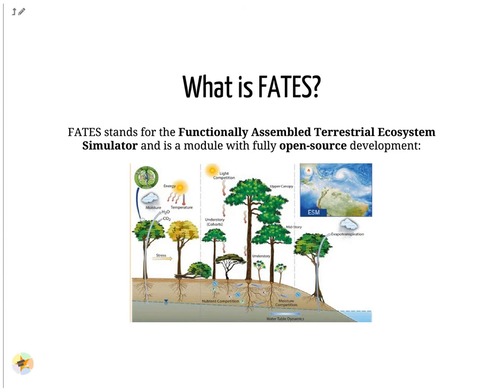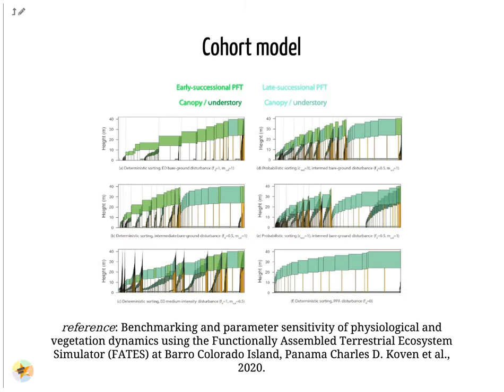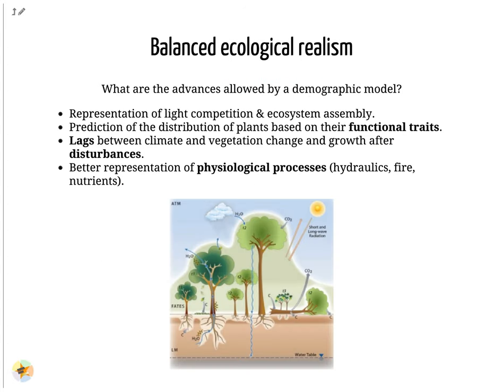FATES stands for the Functionally Assembled Terrestrial Ecosystem Simulator. It is fully open source, available on GitHub, and is designed to operate with a host land surface model. FATES simulates plant physiology, competitive processes, ecosystem assembly and vegetation distribution. With FATES, trees have a height and compete for light. The following advances are enabled with a demographic model: a better representation of light competition and ecosystem assembly, the prediction of the distribution of plants based on their functional traits, the lags between climate and vegetation change and growth after disturbances, and the better representation of physiological processes such as hydraulics, fire and nutrients.